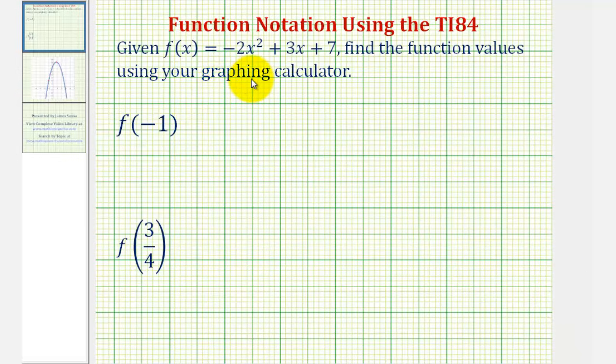Welcome to a lesson on how to determine function values using function notation on the graphing calculator. In this example, we're given f(x) equals negative 2x squared plus 3x plus 7. We want to determine f of negative 1 and f of 3 fourths.